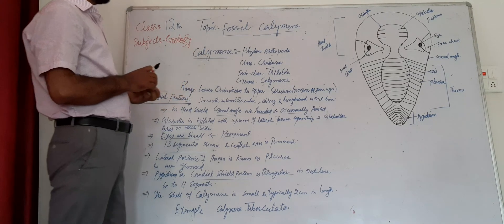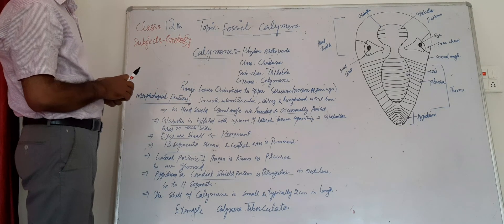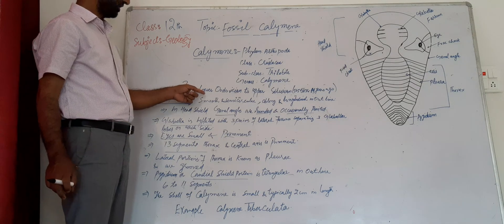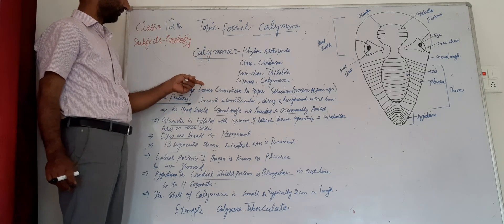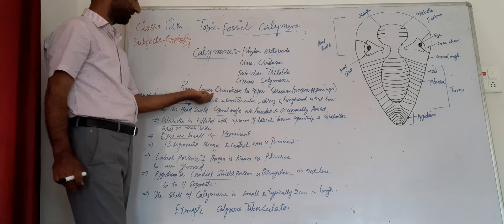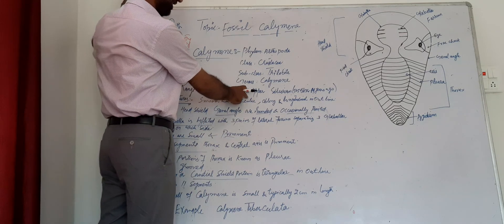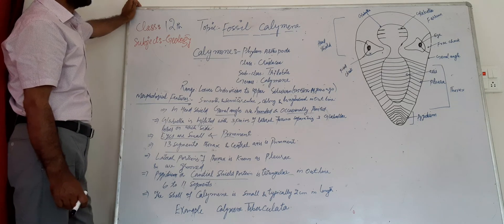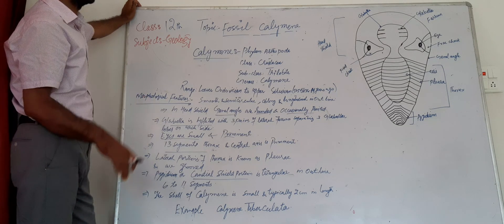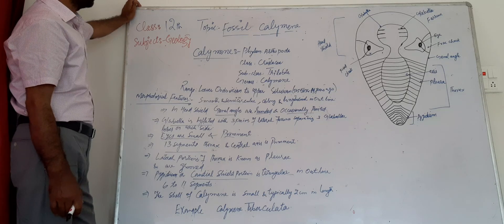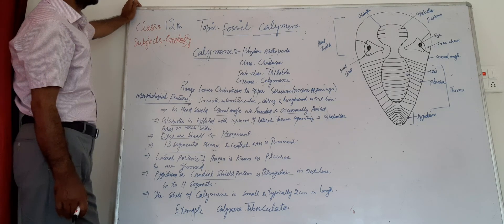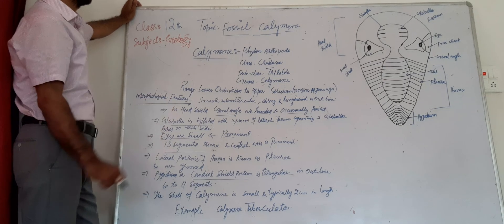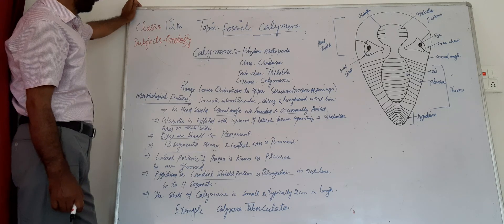When we look at the stratigraphical range — that is, the range history — this fossil was present from the Lower Ordovician to the Upper Silurian, meaning 505 to 438 million years ago. So this is the range of the Calymene fossil.